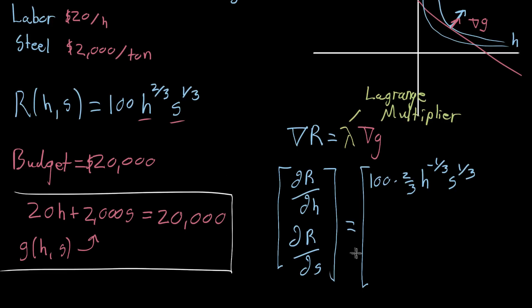And then the second component here, the partial derivative with respect to s, is gonna be 100 times, well now by treating s as the variable, we take down that 1 third, so that's 1 third. h to the 2 thirds just looks like a constant, as far as s is concerned. And then we take s to the 1 third minus 1, which is negative 2 thirds. Negative 2 thirds. Great, so that's the gradient of r.